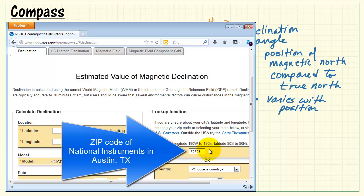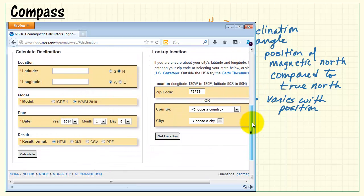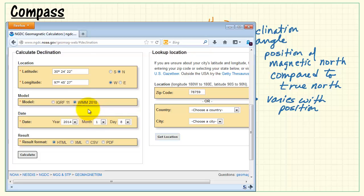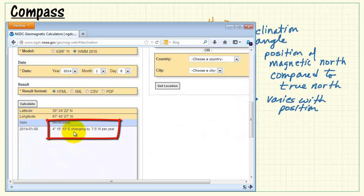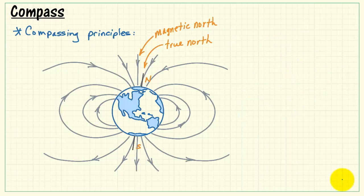Let me try finding out the specific value for the location in Austin, Texas. And this says that we have just over four degrees and that means again a difference of four degrees between magnetic north and true north.